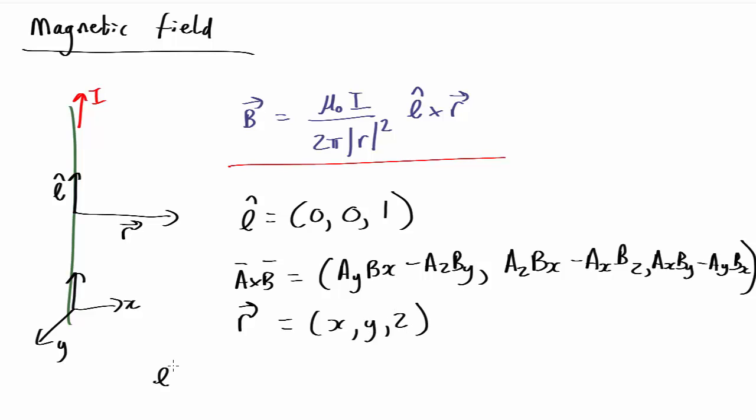we can then work out that L cross r equals: in this case A is L, so it's the y component of L, which is 0. It's going to be 0 times z, which is 0,